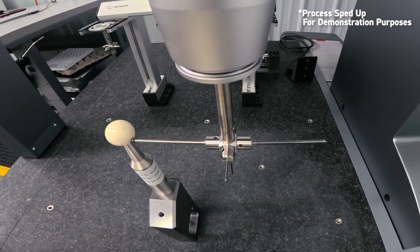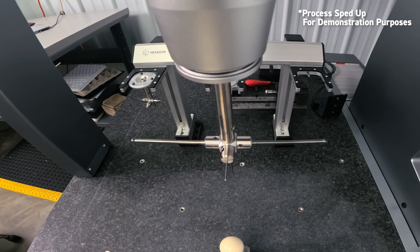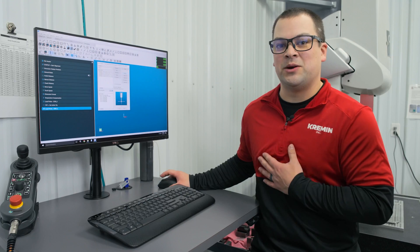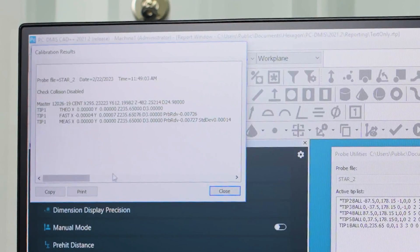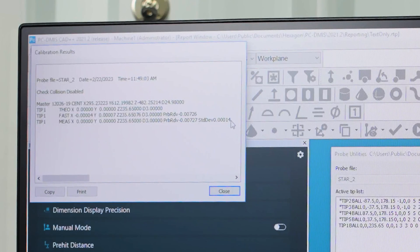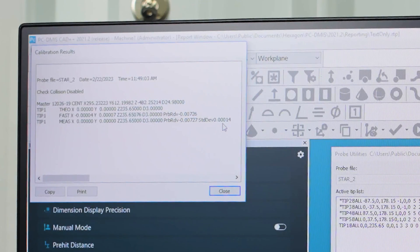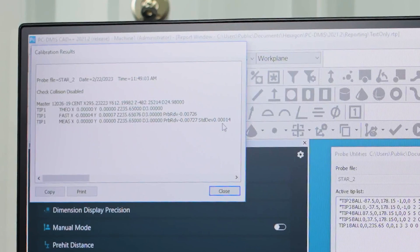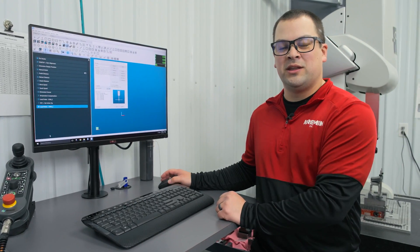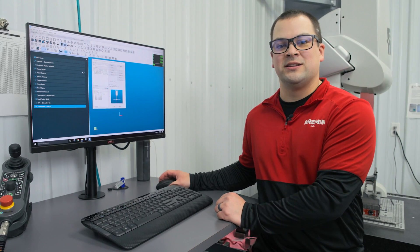Now once the CMM gets through with its calibration program, we can go and we can double check our results to make sure that we're within the tolerances that we want to be in. So in these results, we're just going to look at tip one for now. Our standard deviation was one tenth, which is good for us. We want to be under two tenths on that standard deviation. So I'll be able to use the CMM for the rest of the day and know that I'm going to get some very accurate readings off of it.